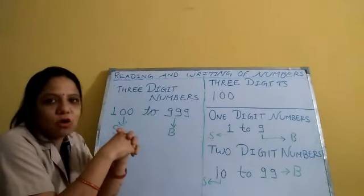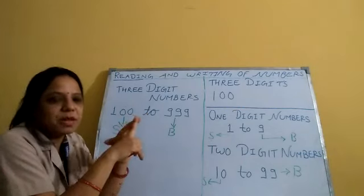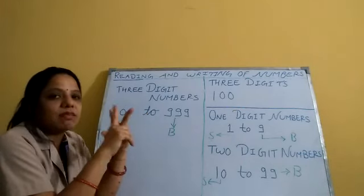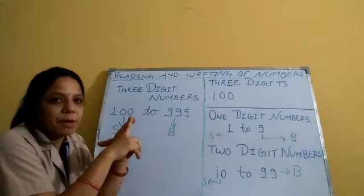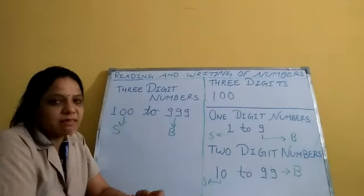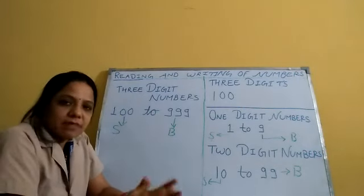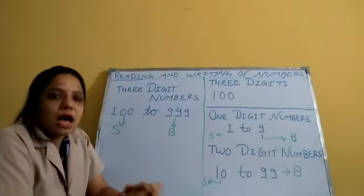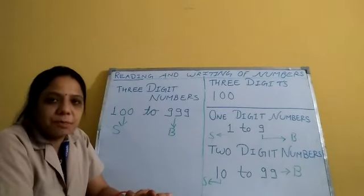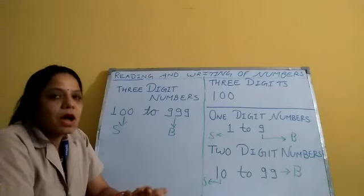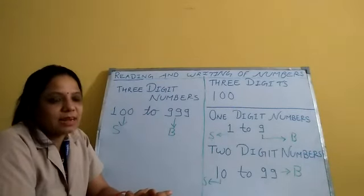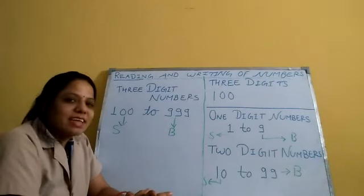You will learn all these things: 1-digit numbers, 2-digit numbers, and 3-digit numbers — what is the meaning of digit and what is the meaning of number. I hope you understand the basic things. In the next session, I will teach you how to read a 3-digit number, how it is formed, and what is the place value. I like you and have a nice day.